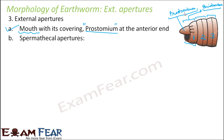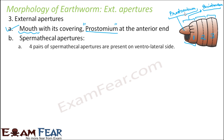Other than the mouth, the earthworm also has spermathecal apertures. There are four pairs of spermathecal apertures located on the ventrolateral sides — that is, towards the belly but sideways. They are located on the fifth to ninth segments. This is the advantage of segmentation — you get to know exactly where organs are located.